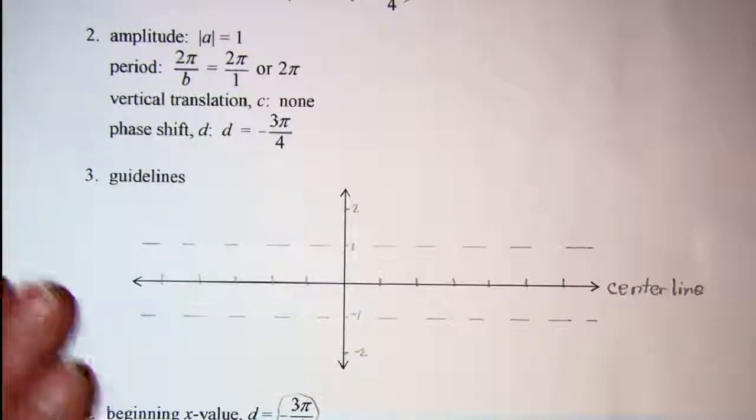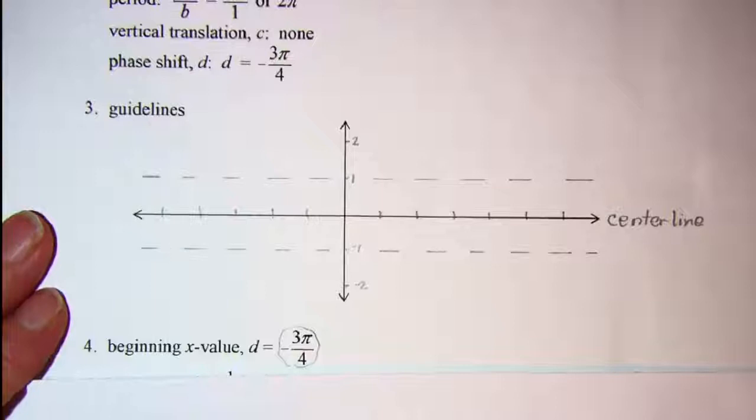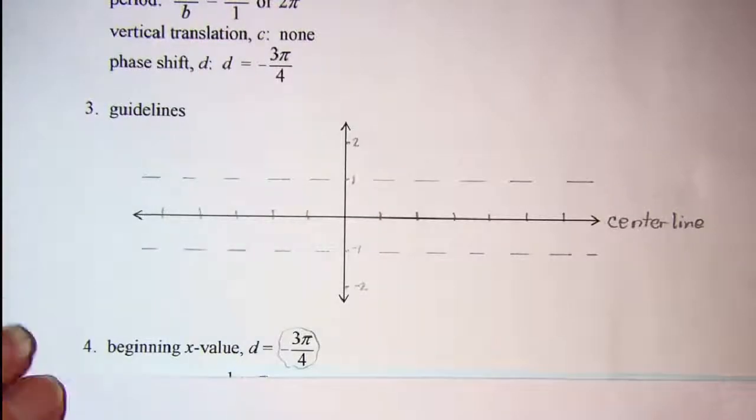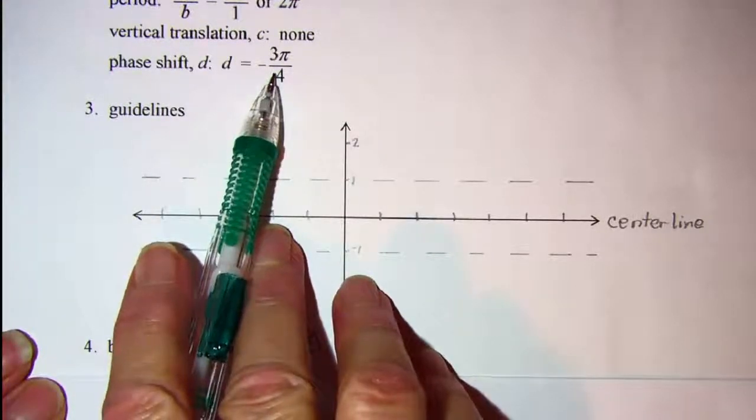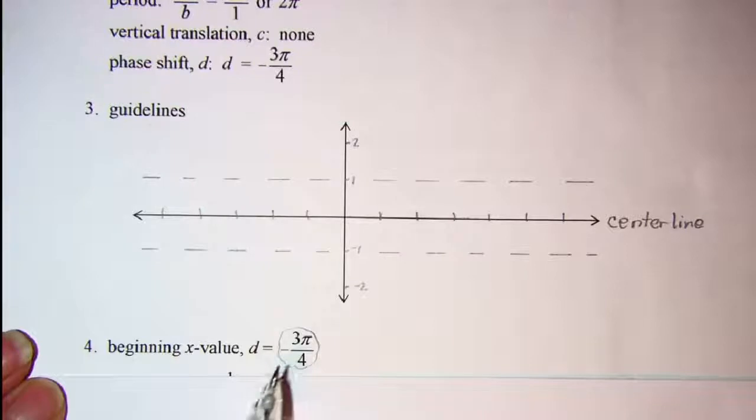Our next step is to determine the beginning value of x, and we can see that because our phase shift is a negative 3 pi over 4, our beginning x value is negative 3 pi over 4.